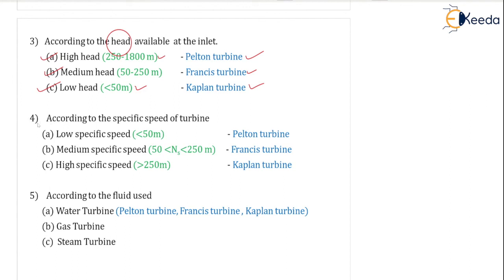The fourth classification is according to the specific speed of the turbine. Low specific speed (Ns less than 50) corresponds to the Pelton turbine. Medium specific speed (Ns between 50 and 250) corresponds to the Francis turbine. High specific speed (Ns greater than 250) corresponds to the Kaplan turbine. We will study specific speed in detail separately for both pumps and turbines.